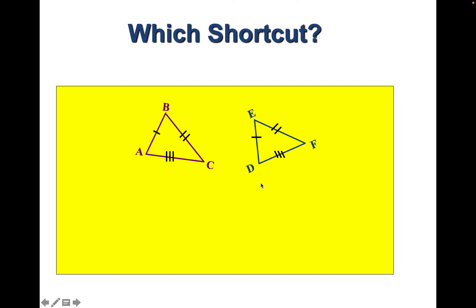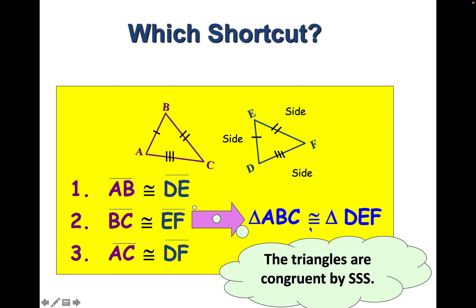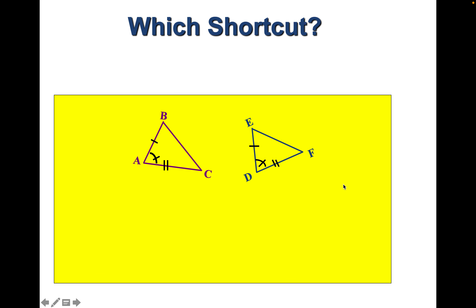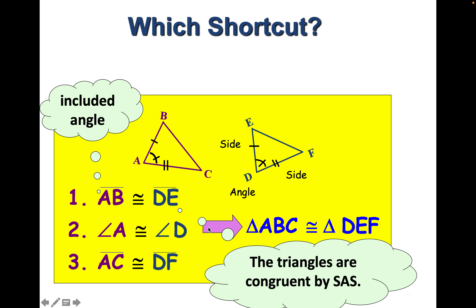Now, which shortcut can we use to say these triangles are congruent? We know three parts: AB is congruent to DE, BC is congruent to EF, and AC is congruent to DF. Therefore, side, side, side — these triangles are congruent by the SSS shortcut. For the next pair, we have a side congruent to a side, then an angle congruent, then another side congruent — side, angle, side matches side, angle, side. Those triangles are congruent by SAS.